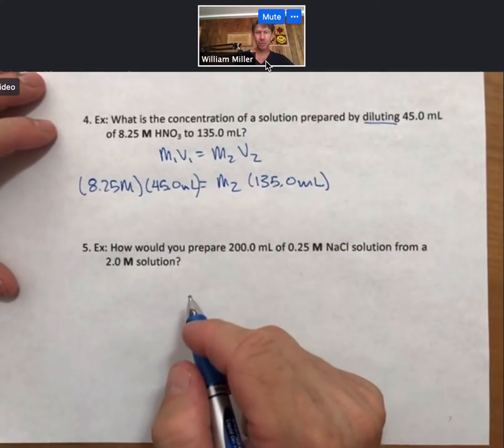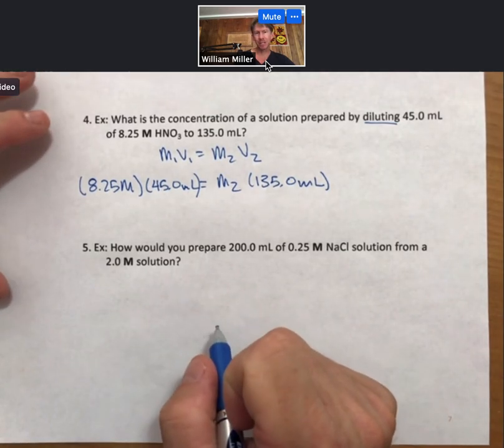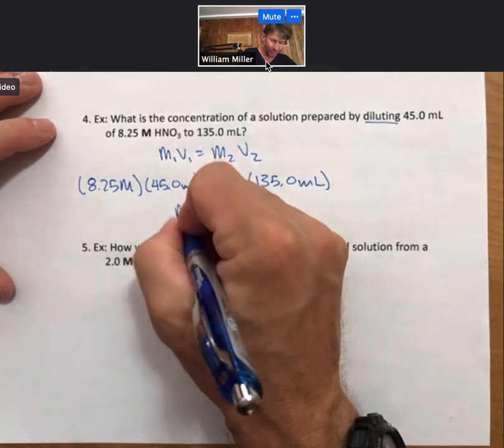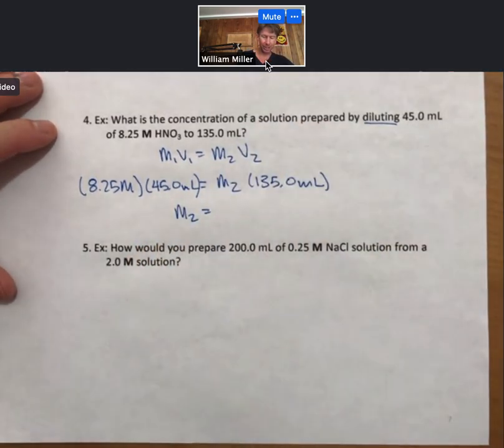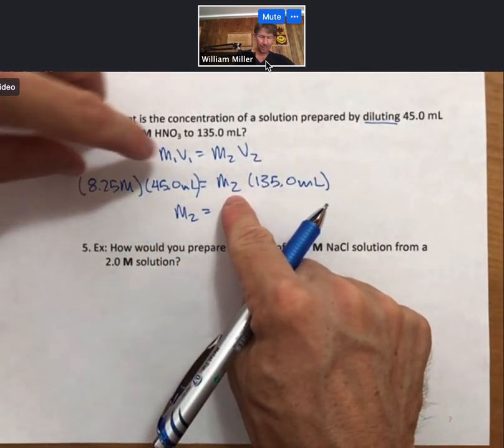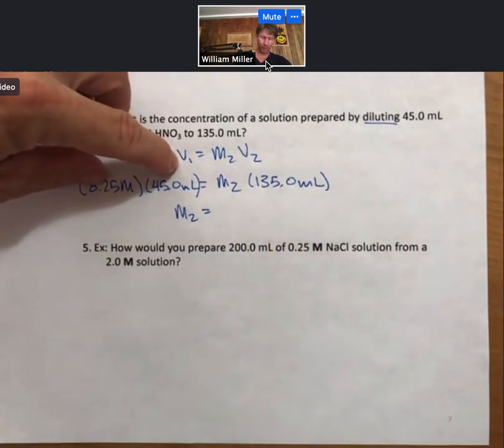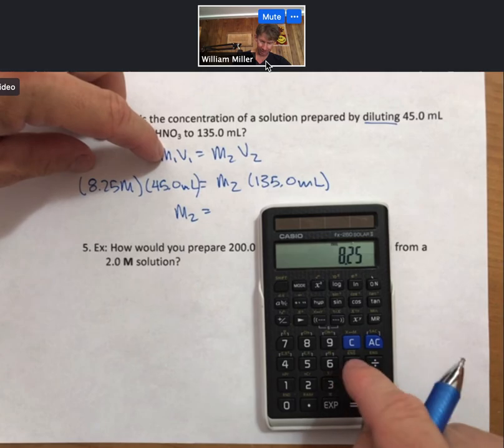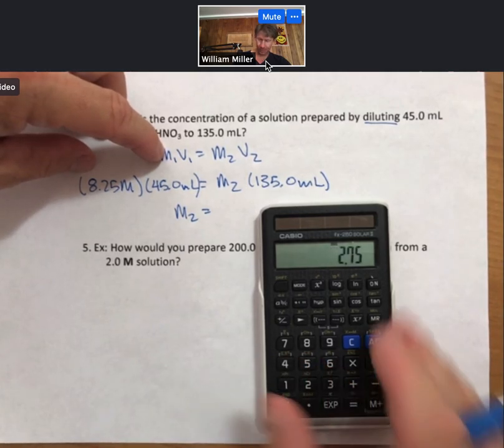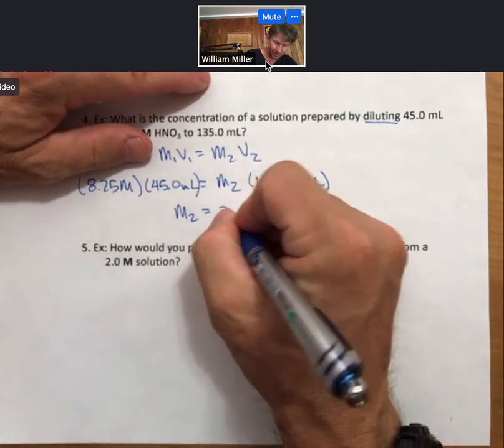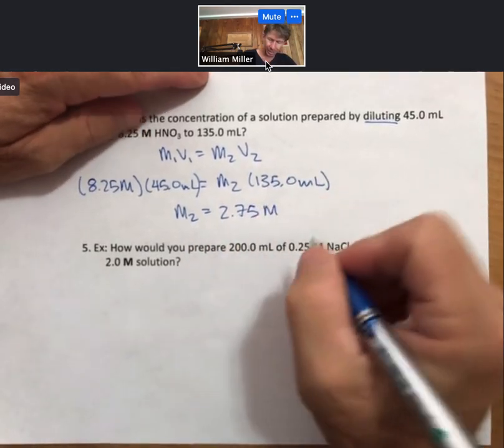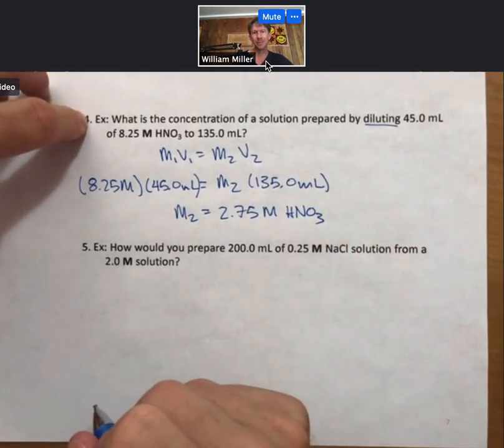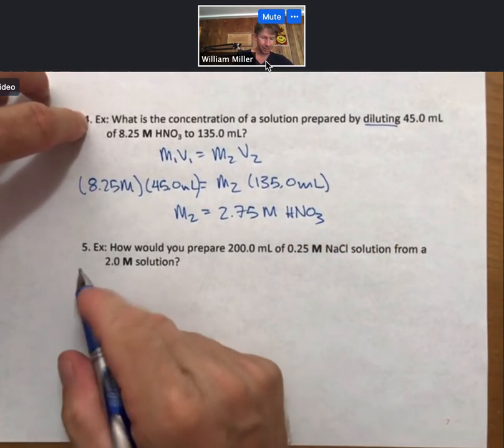And solve for M2, our more diluted concentration. And you can see the units are going to cancel out. We're going to be left with units of molarity. Take these two numbers, divide them by 135. 8.25 times 45 divided by 135. I get 2.75 molarity nitric acid. And this problem, problem number five, is a companion problem.